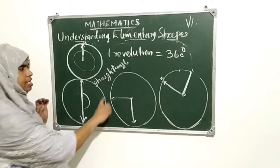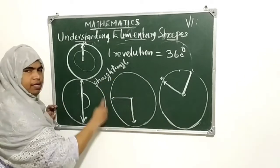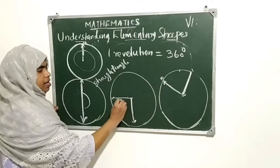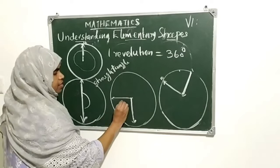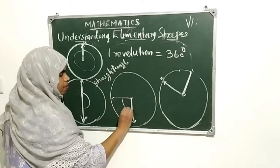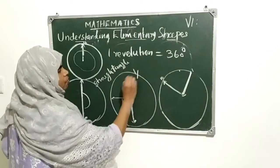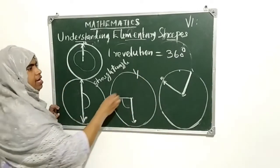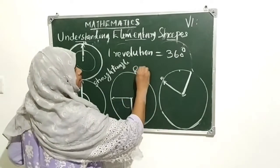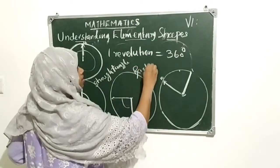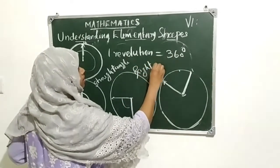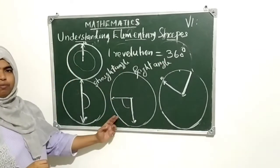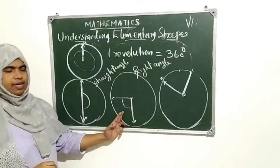This is full or one revolution. And this here formed is one-quarter of one revolution — that is a right angle, 90 degrees. Here a right angle is formed.